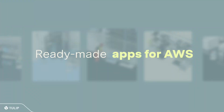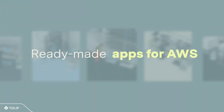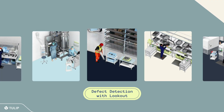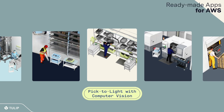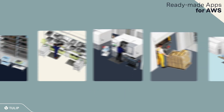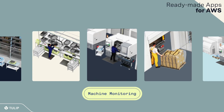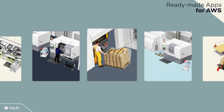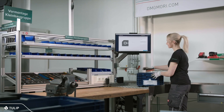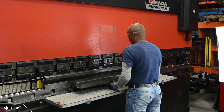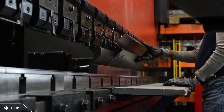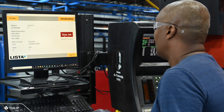Tulip offers a library of ready-made apps and connectors that can be used in your AWS environment. Get started with defect detection, pick-to-light, machine monitoring, dynamic work instructions, and much more to begin building solutions to digitally transform your operation.